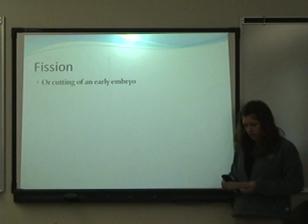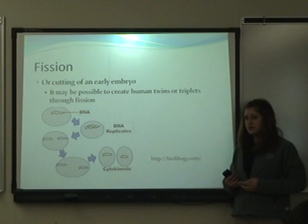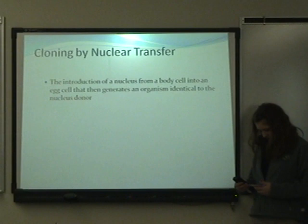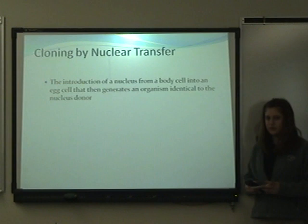Fission, otherwise known as the cutting of an early embryo, is used because it may be possible to create human twins or triplets through it. Cloning by nuclear transfer is the introduction of a nucleus from a body cell into an egg cell that can then generate an organism identical to the nucleus donor.